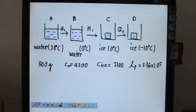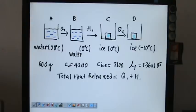So involving the heat loss of Q2, the total heat required or the total heat released we can write as Q1 plus H1 plus Q2.